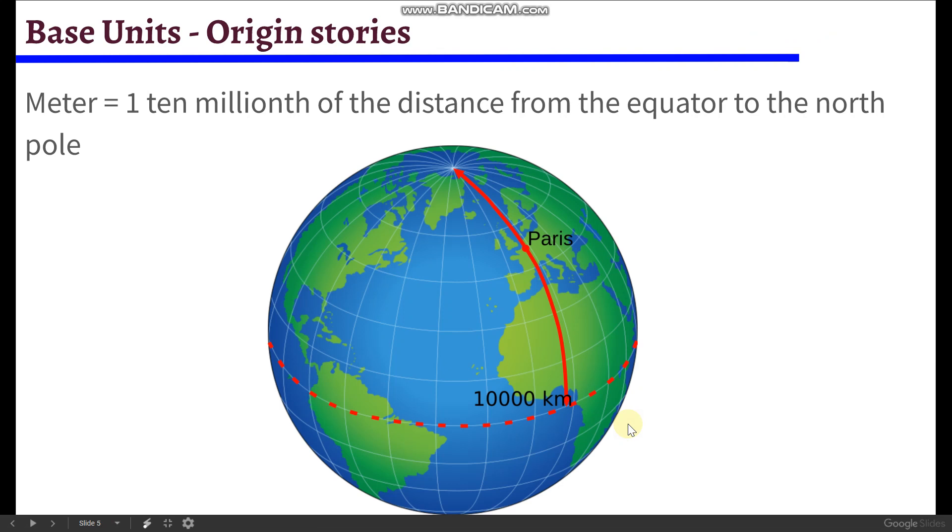Okay, so a quick little history lesson here. Where did all these units come from? So the meter, that is one ten millionth of the distance from the equator to the north pole. So if you take the distance from the equator all the way up to the north pole, and then you cut that distance into ten million equal-sized parts, you've got yourself a meter.